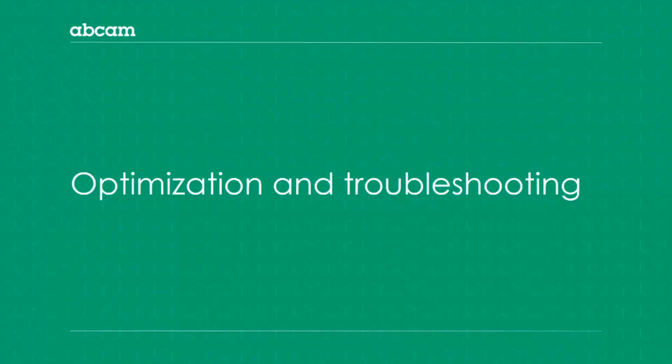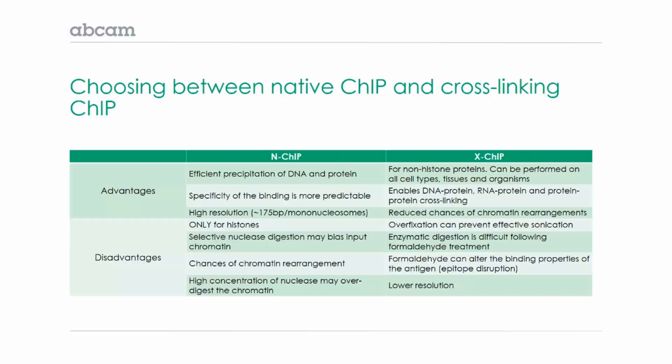Now I'd like to spend some time going over protocol optimization and troubleshooting. As I mentioned earlier, there is native ChIP and cross-linking ChIP, and each has its own advantages and disadvantages.